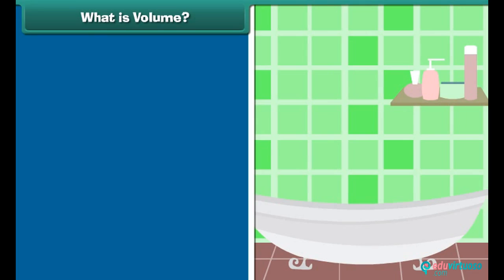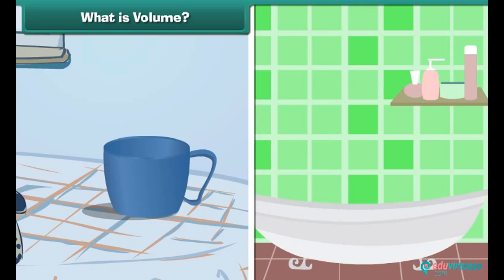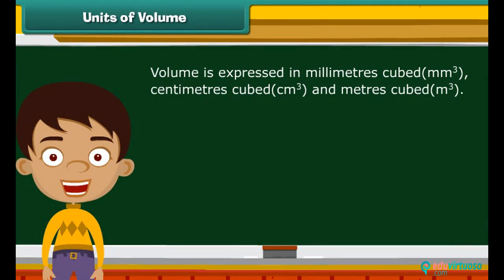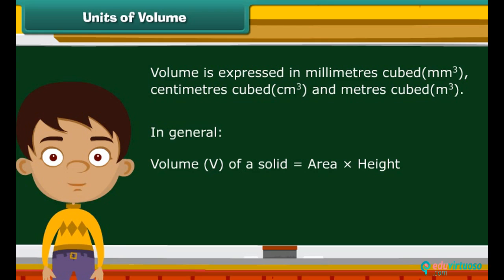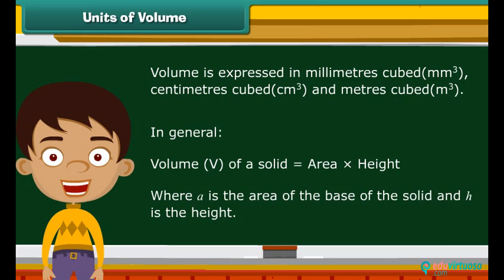A bathtub has more volume than a cup of coffee. Basically, volume is expressed in millimeters cubed, centimeters cubed, and meters cubed. In general, the volume V of a solid is given by area of the base times height, where A is the area of the base of the solid and H is the height. Let's learn about the volumes of different objects.